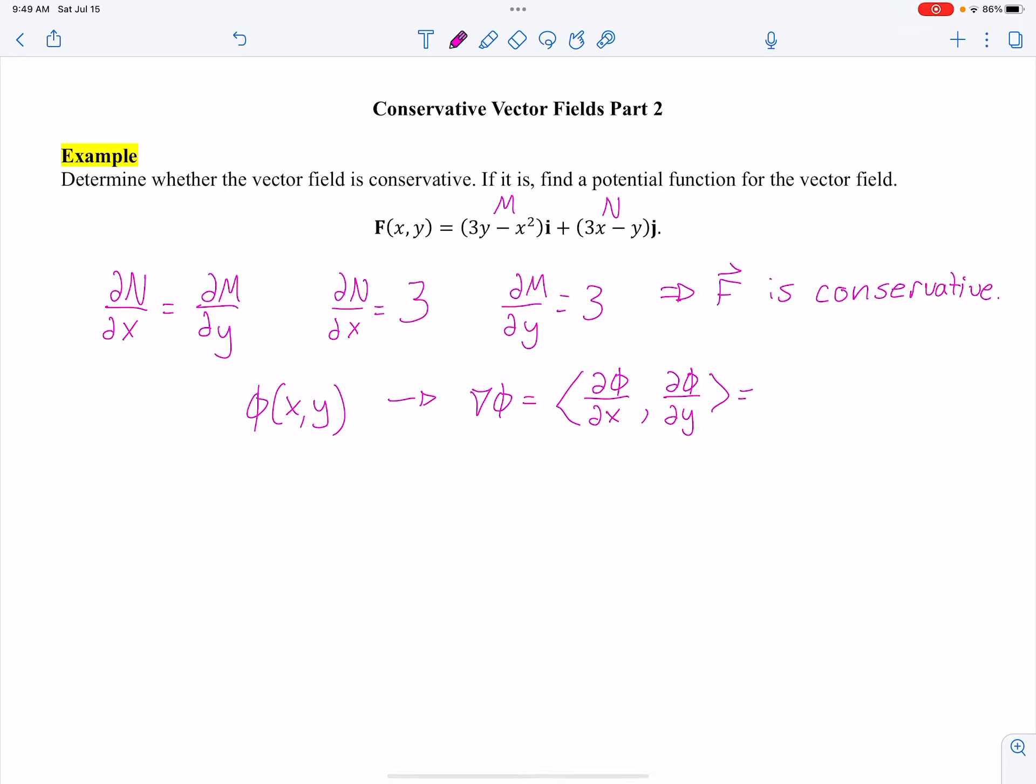So I know this is equal to F, what I have right there. So what that means is the partial of phi with respect to X is actually the same thing as 3Y minus X squared.